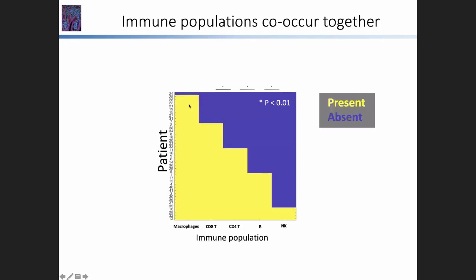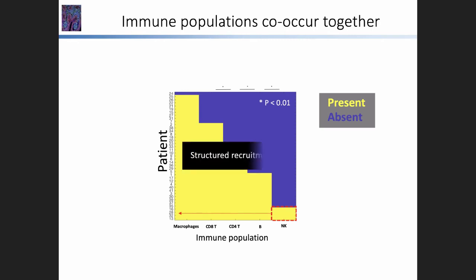We classified different immune populations as either present or absent in each patient. What turned out was very organized: all patients that had NK cells in their tumor also had B cells, CD4 T cells, CD8, and macrophages, but not the other way around. Putting this together with the previous result, this leads us to think that there's some sort of structured recruitment of immune populations into the tumor.